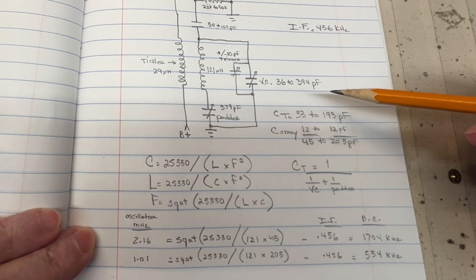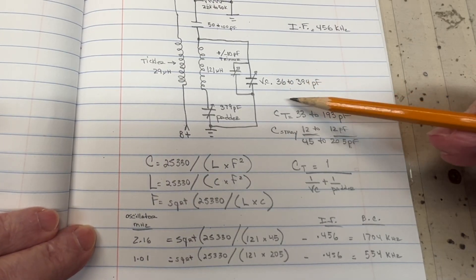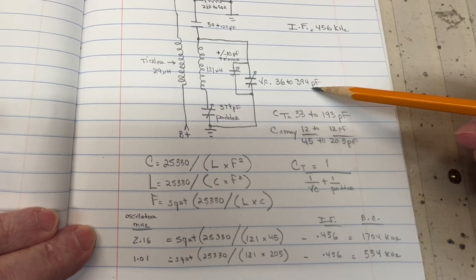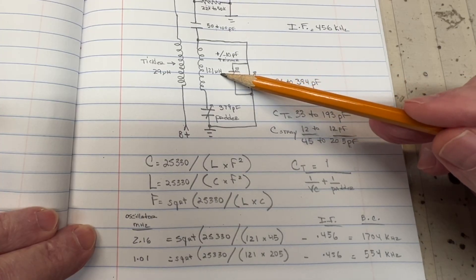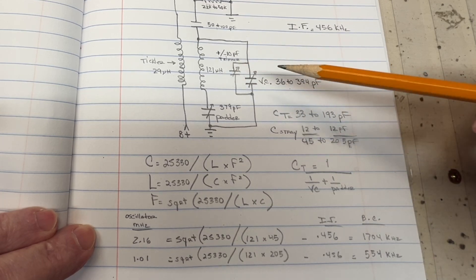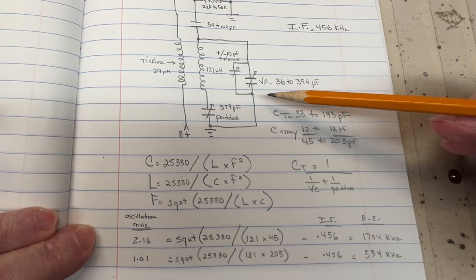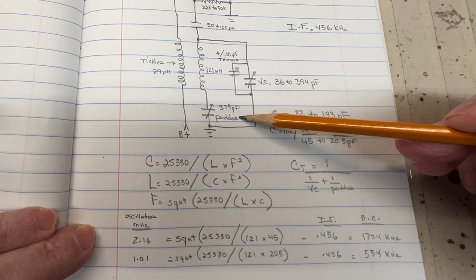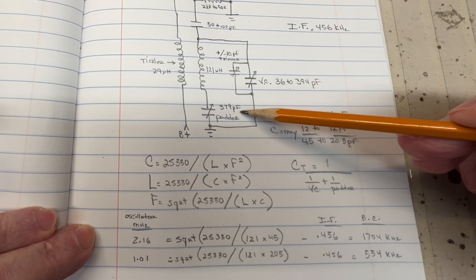So if you do the math, you'll find that the 36 to 394 pF, when attached to the 121 microhenry inductor does not resonate at the desired oscillator frequency. Thus, the reason or one of the reasons for the padder.